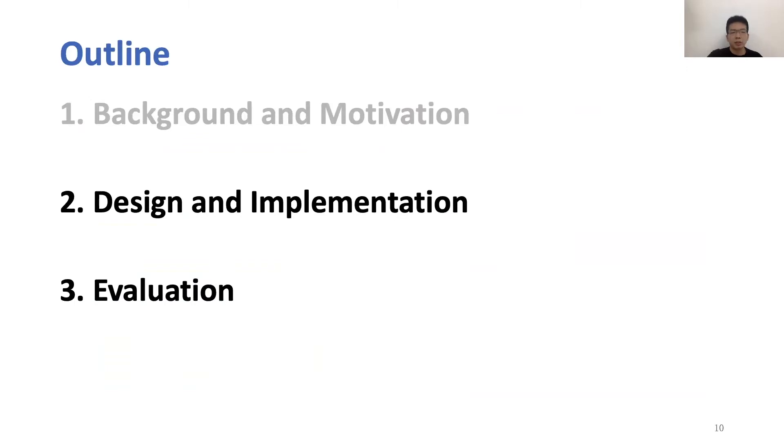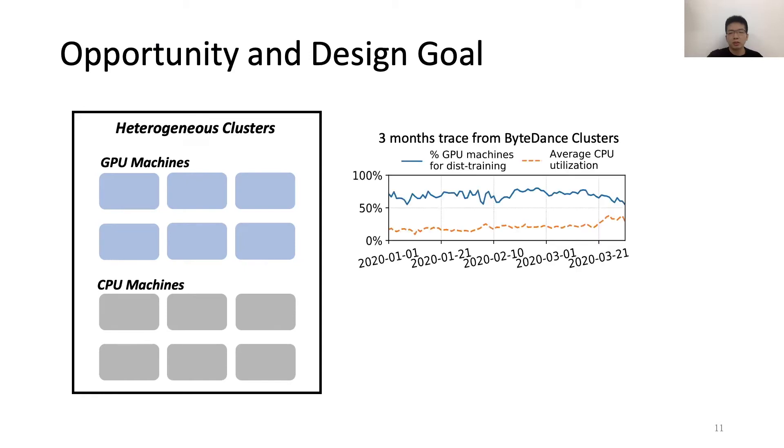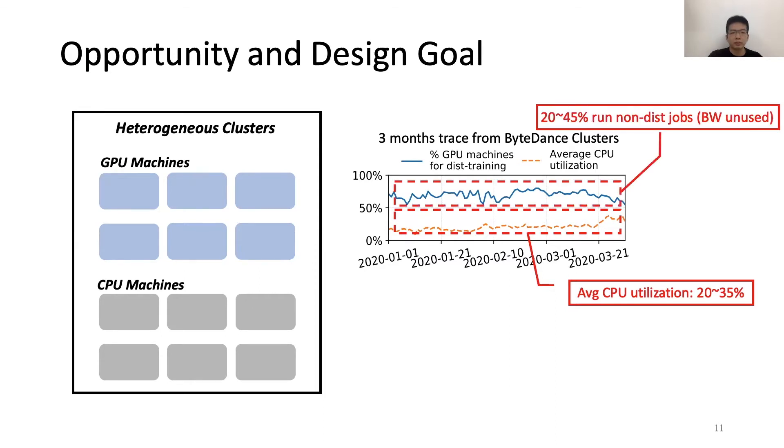Next we will move on to the design and implementation. We first introduce the design goal. We focus on heterogeneous clusters with GPU and CPU machines. In practice, we have some interesting findings. This is a three-month trace collected from an internal cluster of ByteDance. And we find that the average CPU utilization is only about 20-35%. And there are about 20-45% GPU machines that only run non-distributed jobs, meaning their bandwidth is unused. So a new opportunity is that there are spare CPUs and bandwidths in heterogeneous clusters. And our design goal is to leverage any of these spare resources.